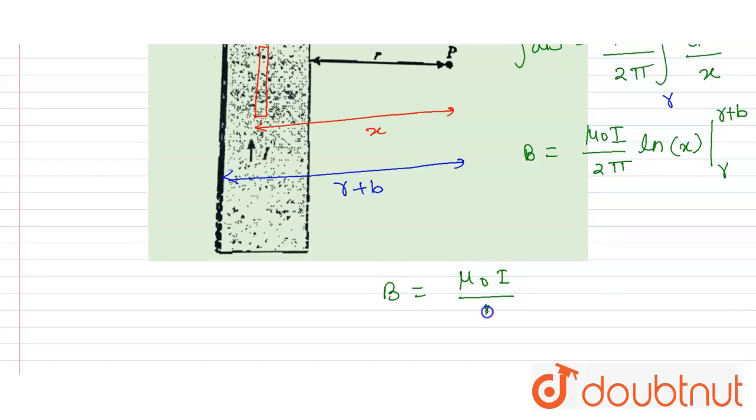2π and then r plus b divided by r. So this is the answer.